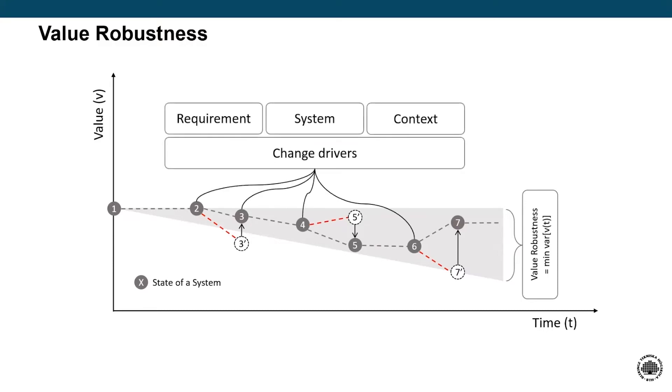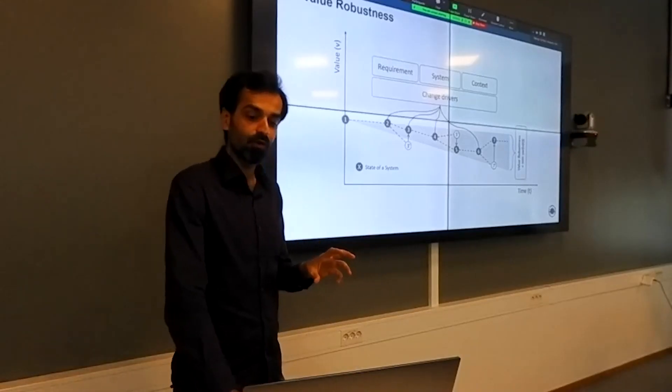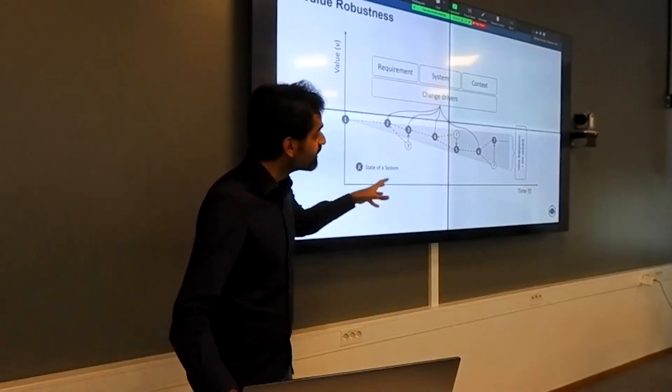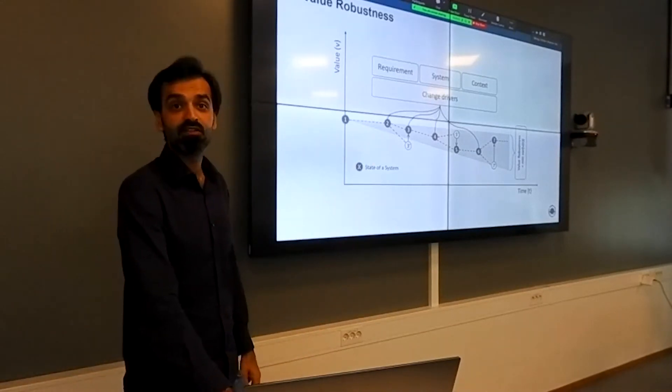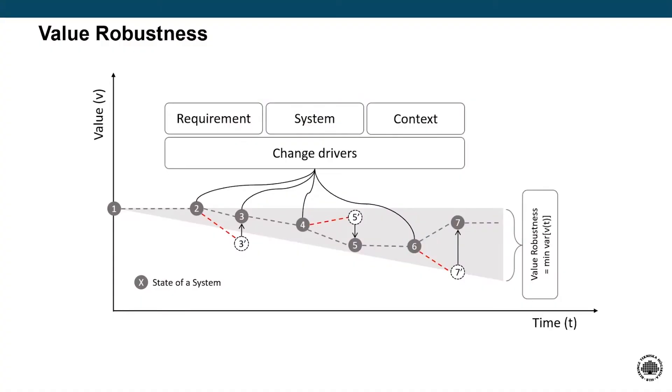And then we have to now start plotting what are the drivers that change so that our system needs to change. We could generalize it in the change in requirements, change in context, change in the system itself—like my system deteriorates or needs maintenance quite often, and you start depreciating its value. So this picture is where my research is focused on. I'm trying to understand how can we achieve these results when we start designing a solution, especially in the early stages.